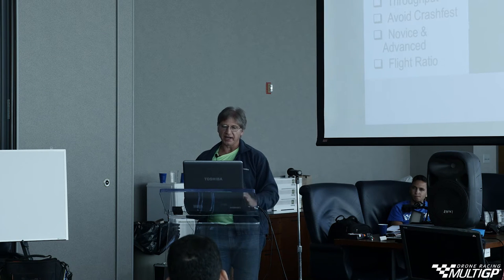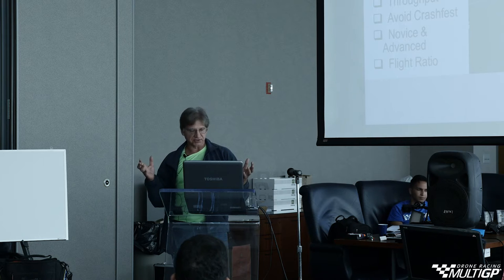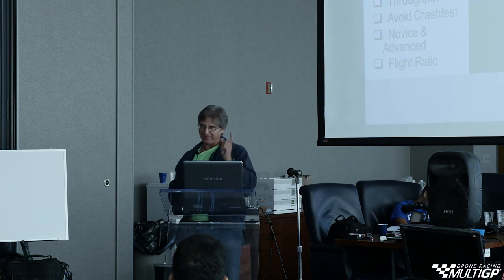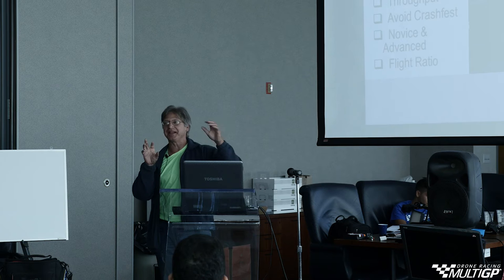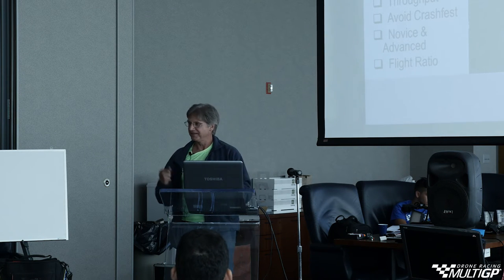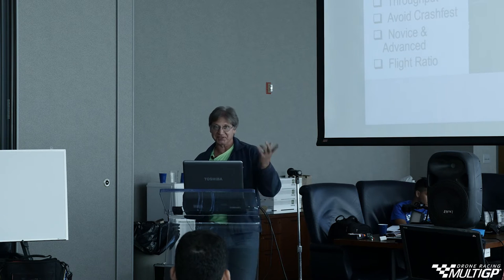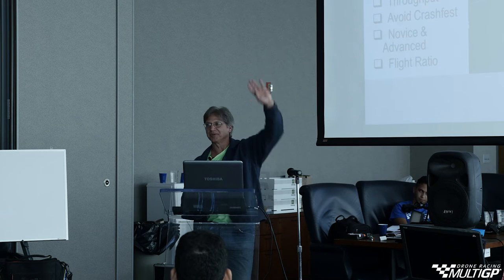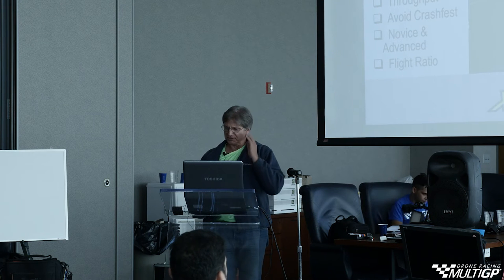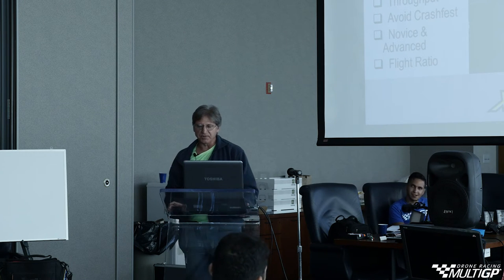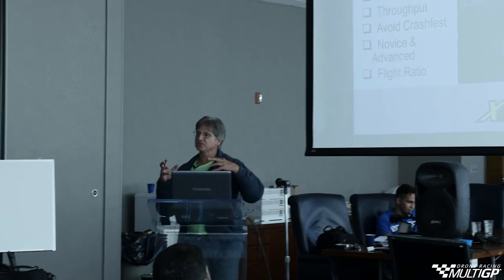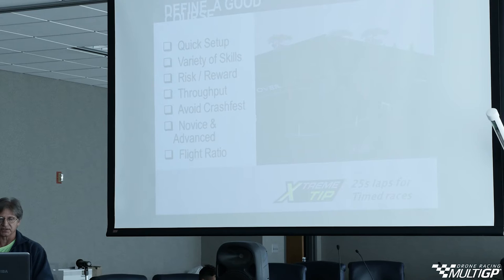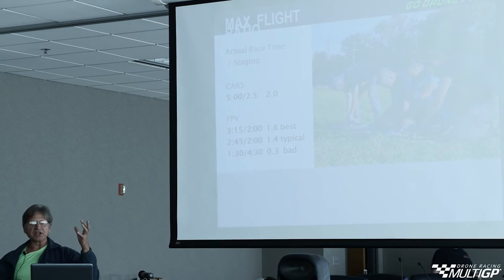You want to design one course for a variety of skill sets — novice and advanced — and we'll show you how to do that. Then there's flight ratio. Not many people bring this up. Flight ratio is: if you'd like to see drone racing go big time, you need to know it. For timed races, 25 seconds is your bogey. A flight ratio is the amount of time the drone stays airborne divided by the time it takes to set up that race.